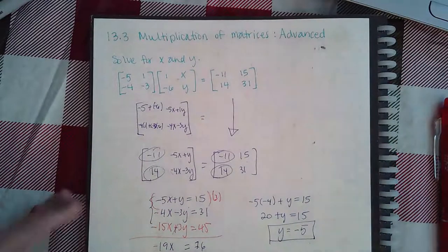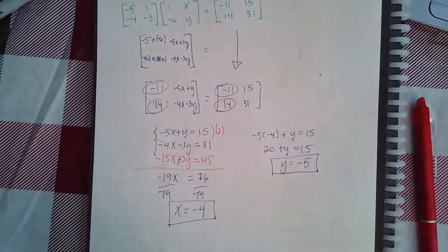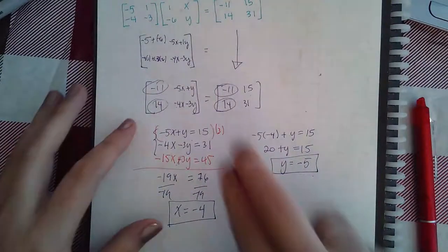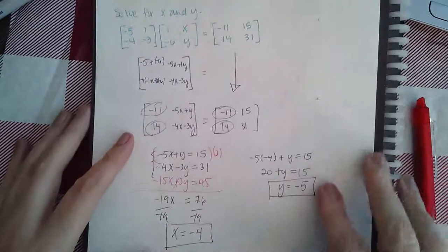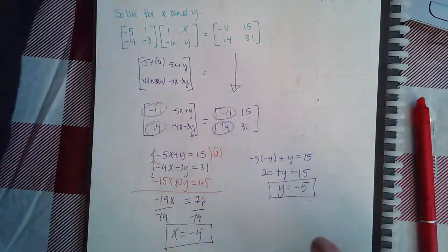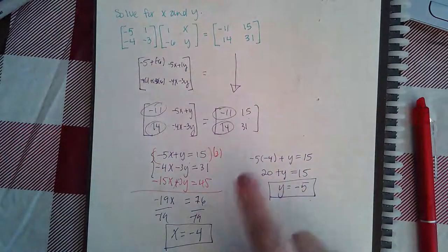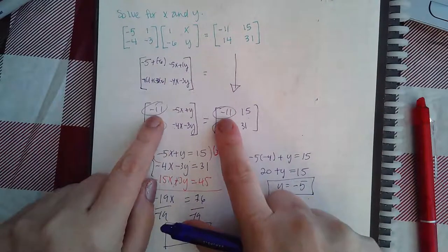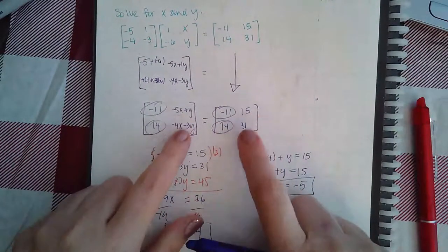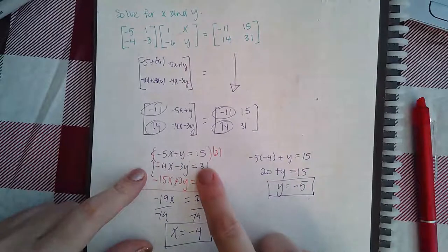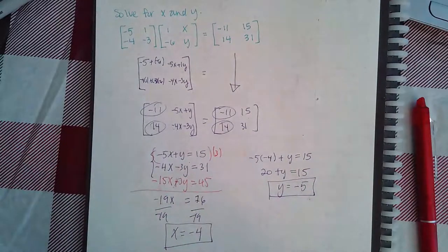Okay so it's just a matter of doing the multiplication and then setting each corresponding element equal to one another. These already match, these already match, and then these two will create that system that you can solve for the two variables.